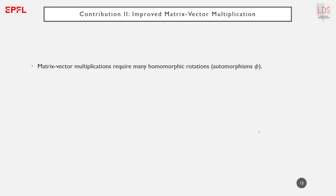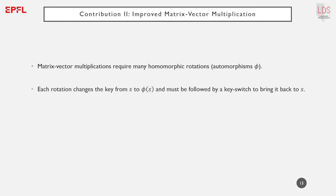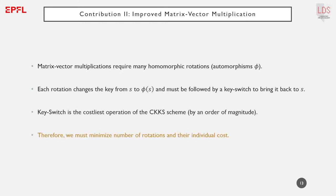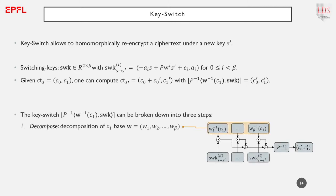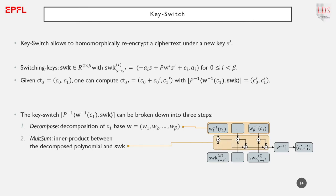Our second contribution is an improved matrix-vector multiplication algorithm. Matrix-vector multiplications require many homomorphic rotations, and these are heavy operations as they must be followed by a key switch — the most computationally expensive operation of the CKKS scheme. A key switch is a procedure that homomorphically re-encrypts a ciphertext under a different key, broken down into three steps: decomposing the polynomial into low-norm elements following an integer basis W, an inner product between the decomposed polynomial and the key switch key, and dividing the result by a large integer p to further reduce noise.